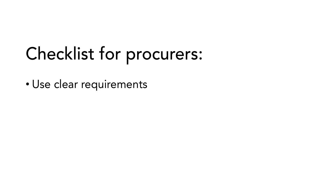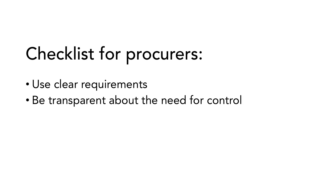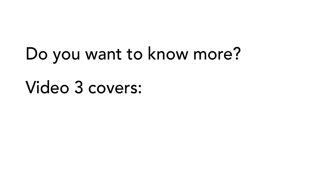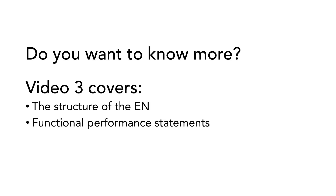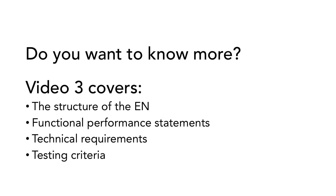Small checklist for procurers: make sure to use the standard and specify exactly what functionality or result you are looking for, so suppliers can understand it. Make sure suppliers are aware that you will control that the solution meets the requirements. Check that you get what you ordered. When you procure something that is dynamic, this needs to be done within each phase. In the next video, we will look at the structure of the standard, what types of requirements are included, and the relationship between them. Thanks for watching!